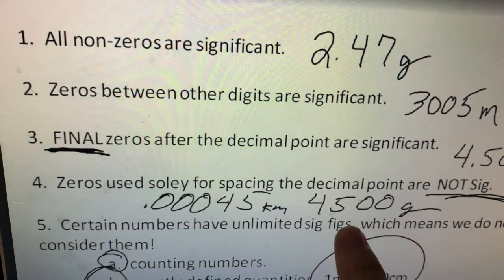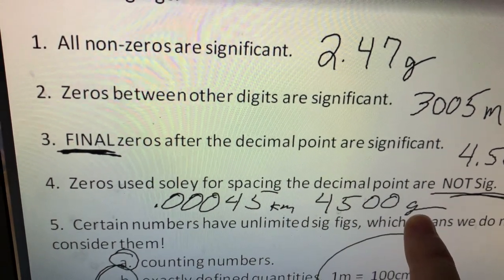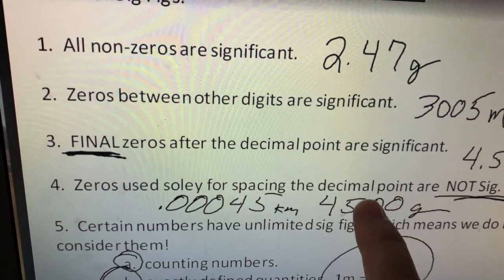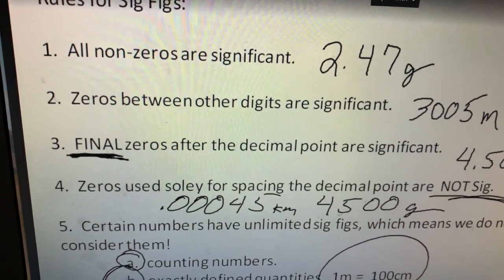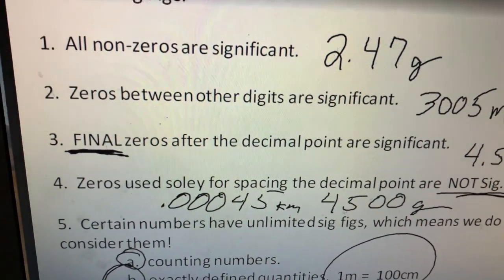Same goes if you have a larger number, 4,500 grams. These zeros are placeholders. Again this is probably something that was measured in milligrams and then converted.